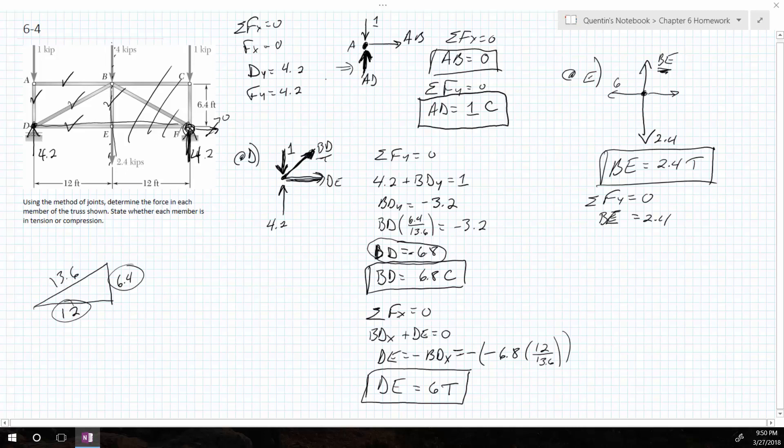So AB is 0. So this works out to be 0. AD, this is in slight compression with a value of 1. BD, this one right here, is in a lot of compression. Its value is 6.8.